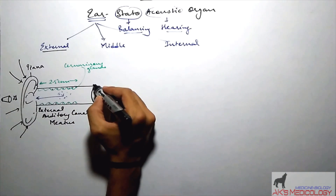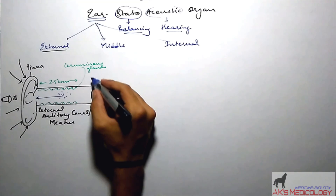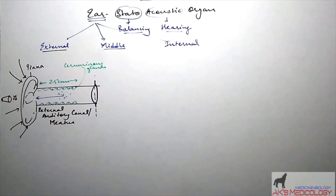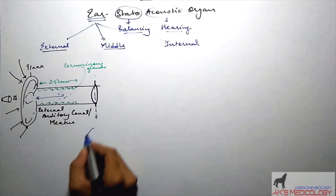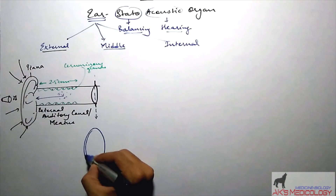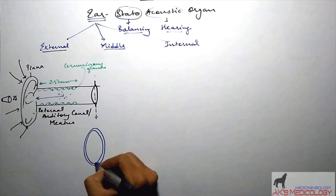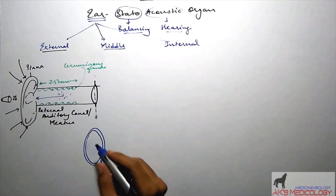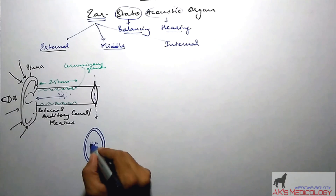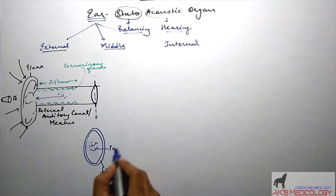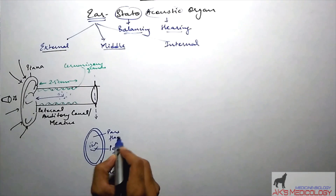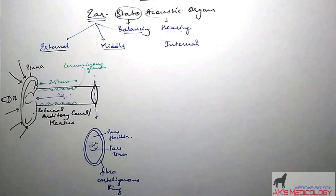The external auditory canal ends into a membrane-like structure known as the tympanic membrane, or in common language the eardrum. The eardrum transmits sound from the external ear to the middle ear — it is the connection between the external and middle ear. At its periphery it is in contact with the external auditory meatus via a fibrocartilaginous ring. At the center is a tensed area known as pars tensa, and surrounding it is the pars flaccida, which is flaccid.